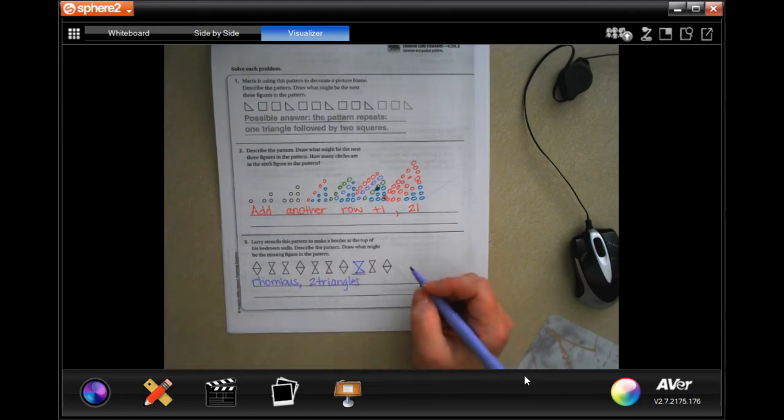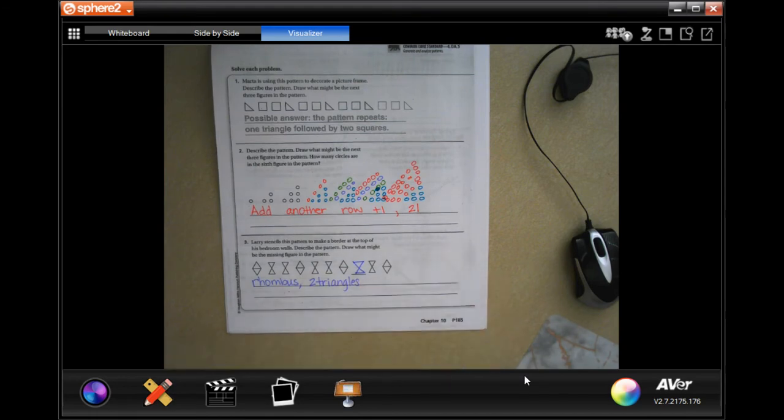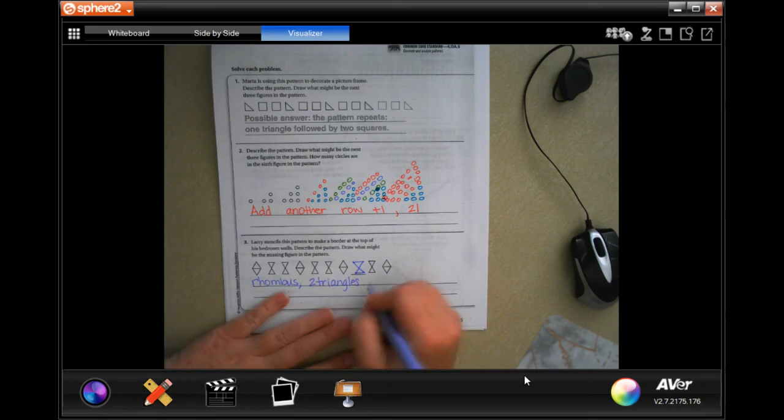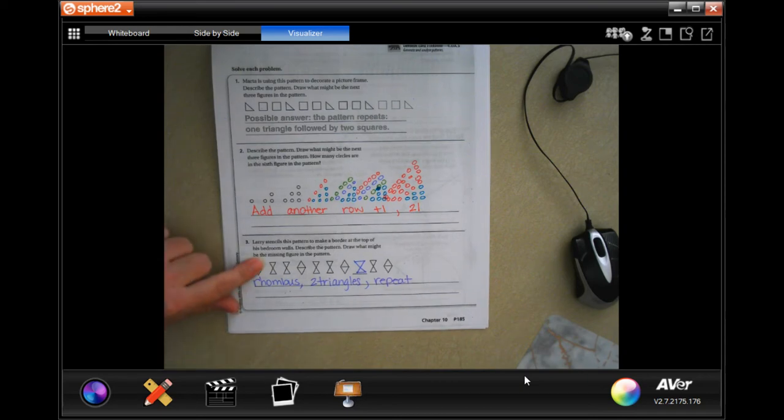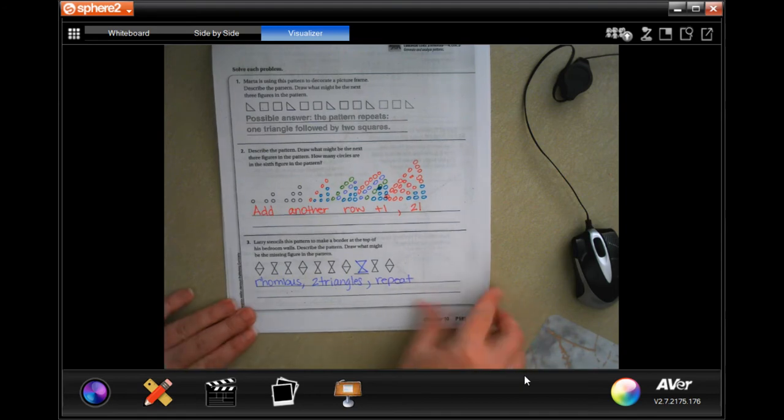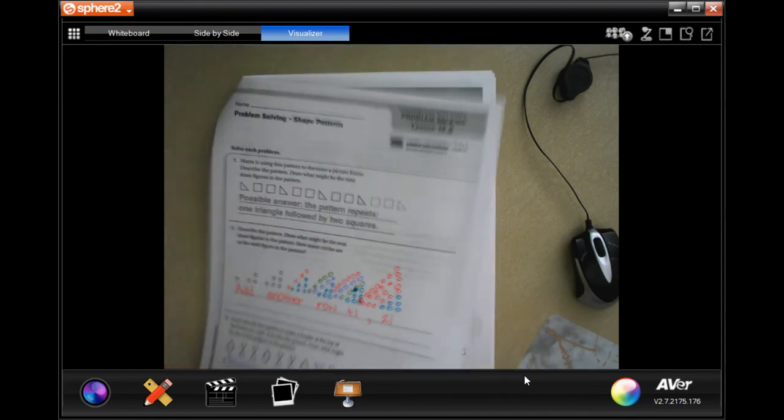And then we filled in, and then let's put repeat. So rhombus, then two triangles right there, and then we're gonna repeat that. So that's your pattern.